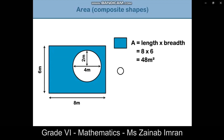To get the area of the shaded part of the shape, we need to subtract the area of the circle from the area of the rectangle. 48 minus 12.56 equals 35.44 meters squared.